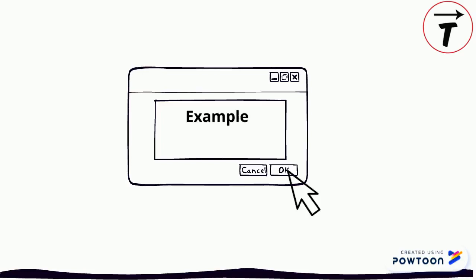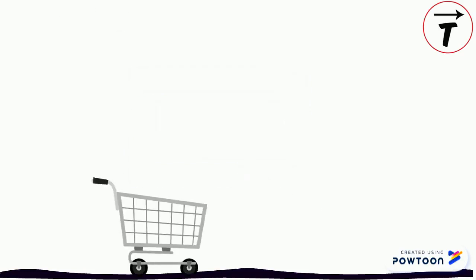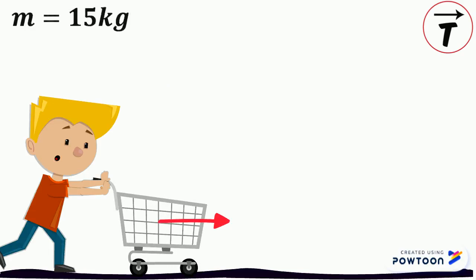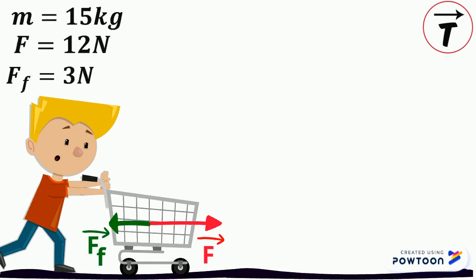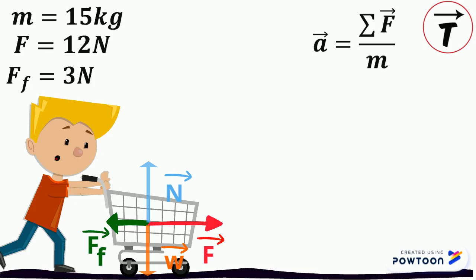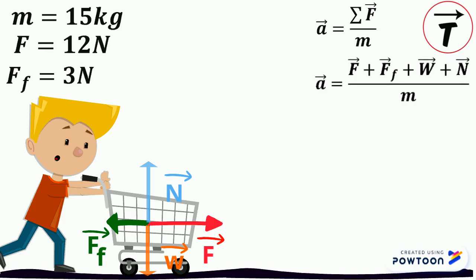Let's take some numerical values. The shopping cart has a mass of 15 kilograms. The boy applies a constant force of magnitude 12 Newtons to the right. The force of friction is of magnitude 3 Newtons, opposing the applied force. To find the value of the acceleration, we apply Newton's second law: a equals the sum of forces over m. The forces acting on the cart are the applied force, the frictional force, the weight W vertically downwards, and the normal reaction of support vertically upwards.